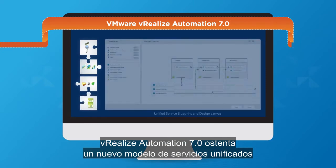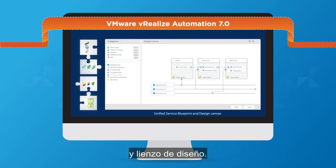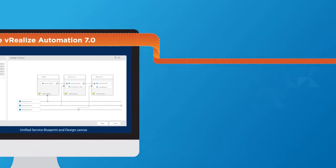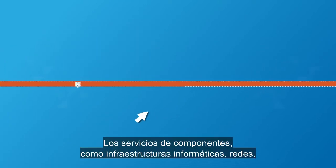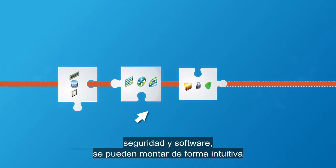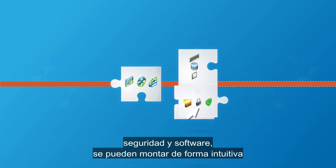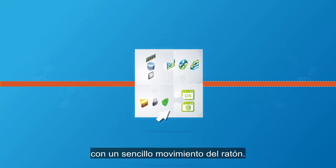vRealize Automation 7.0 boasts a new unified service blueprint and design canvas. Component services like compute infrastructure, networks, security, and software can be intuitively assembled with a simple move of your mouse.